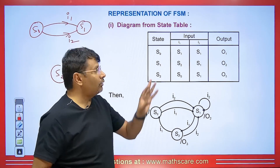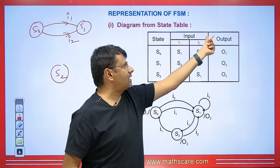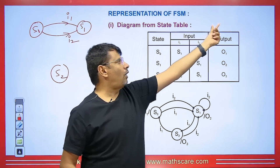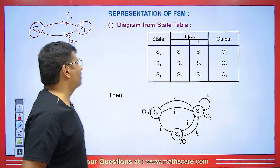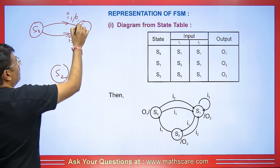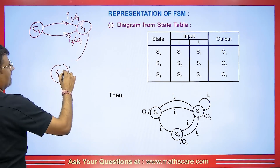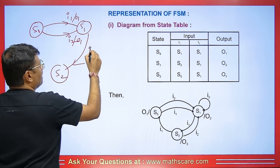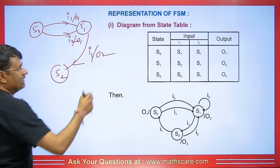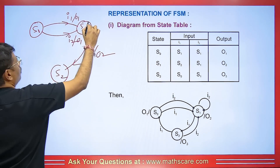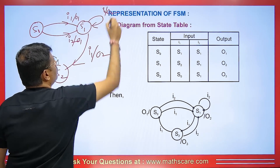Sometimes you might come across two types of tables in your exams — either you will be given this type of table, or an output corresponding to its input. Here, both corresponding inputs have the same output O1. S1 is going to S2: state 1 is going to state 2. The input in that case is I1 and the output is O2. Similarly, S1 going to itself becomes a self-loop, with input I2 and output O2.